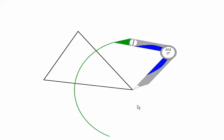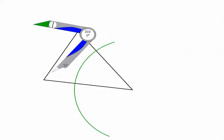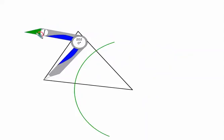Keeping the compass the same size, I'm going to move the point of the compass to this other point and I'm going to spin that arc around.